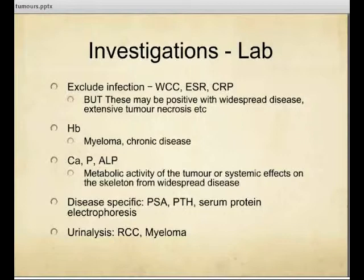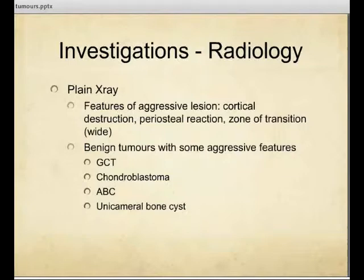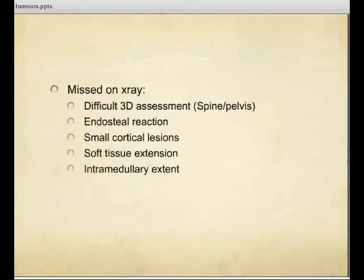Our basic investigation is of course the x-ray. Features of an aggressive lesion include cortical destruction, periosteal reaction, and wide zone of transition. But there are a group of bone tumours that show more aggressive-type features that are actually benign. The issue with x-ray is that we can't really get a 3D assessment, can't assess soft tissue or the extent of the tumour intramedullary, and also endosteal reactions.